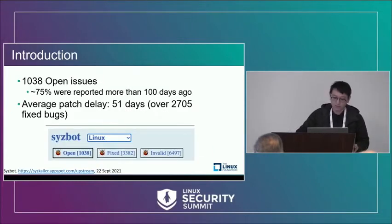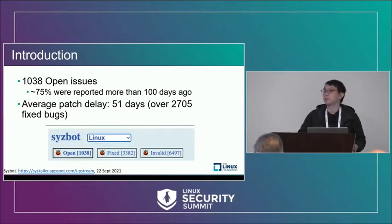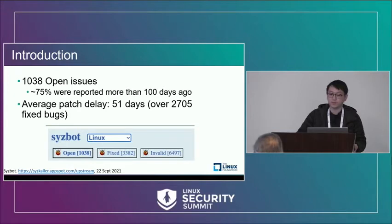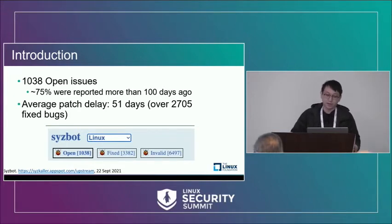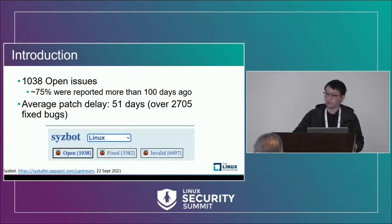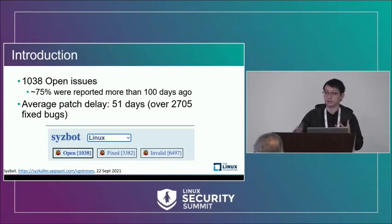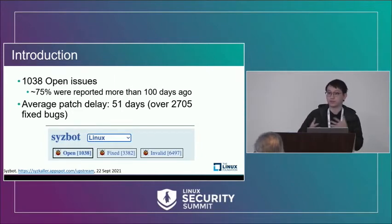This is a screenshot I took about one week ago. As we can see, there were still more than 1,000 open issues, and among them, about 75% were reported more than 100 days ago. Even for those fixed bugs, the average patch delay is still about 51 days. Although we cannot fix all of them, we can at least prioritize the fix for those definitely exploitable bugs.